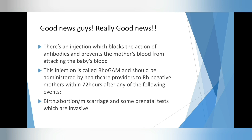This injection is called RhoGAM and should be administered by healthcare providers to Rhesus negative mothers within 72 hours after any of the following events: number one, birth; two, abortion or miscarriage; three, some invasive prenatal tests — we already talked about those prenatal tests in the previous video.